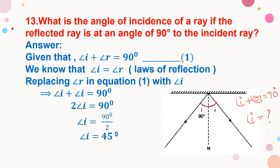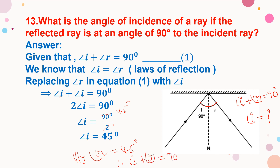Then angle I plus angle I equals 90 degrees, so 2 times angle I equals 90 degrees. Therefore angle I equals 90 divided by 2, which is 45 degrees. Similarly, angle R is also equal to 45 degrees. Therefore, angle I plus angle R equals 90 degrees, and the angle of incidence is 45 degrees. The angle of reflection is also equal to 45 degrees.